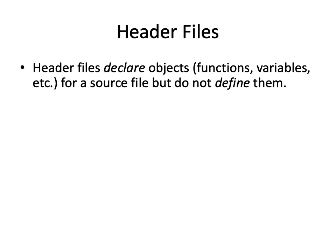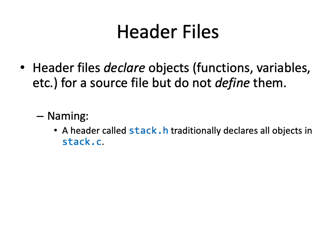Header files declare objects such as functions, variables, and global variables. They can do typedefs. They declare these objects for a source file but don't necessarily define them. A header file is traditionally called something like stack.h if you're making a stack object. That would declare all the functions and maybe a type or two, but all of these things would be actually defined in stack.c. Stack.h would have the typedef for your stack object and declare the functions — just the method signature followed by a semicolon.